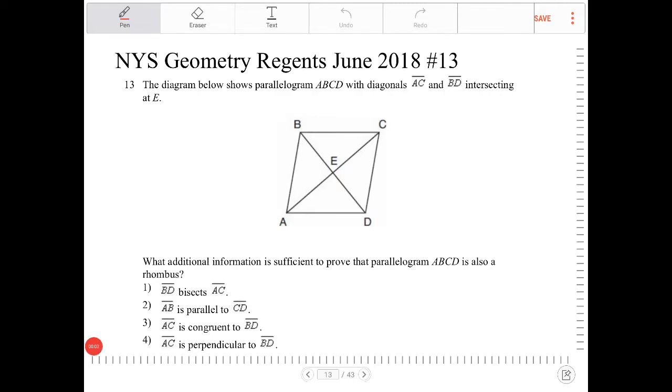The diagram below shows parallelogram ABCD with diagonals AC and BD intersecting at E. What additional information is sufficient to prove the parallelogram ABCD is also a rhombus?